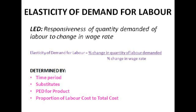The next factor is substitutes. If there are more substitutes for labour, like machines or other workers, there's going to be a higher elasticity of demand. Next is the price elasticity of demand of the product — if there's inelastic demand for the product, there's going to be inelastic demand for labour, whereas if there's elastic demand for the product, there's going to be elastic demand for labour. This is because an increase in the wage rate massively increases costs of production, causing a fall in demand for the product if it's elastic. The last factor is the proportion of labour cost to total cost — the larger that proportion, the higher the elasticity, because any increase in the wage bill will have a significant effect on costs.